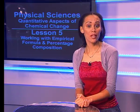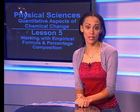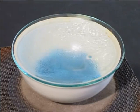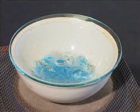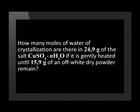The water molecules are always combined in a definite ratio in the hydrate salt. Blue copper(II) sulfate is heated in a crucible which has a lid, and there are also some water droplets. How many moles of water of crystallization are there in 24.9 grams of the salt with the formula CuSO4·nH2O, if it is gently heated until 15.9 grams of an off-white dry powder remain? The dot in the formula indicates that the water is trapped in the crystal of the compound — it is not a multiplication symbol.